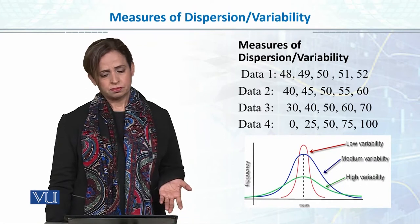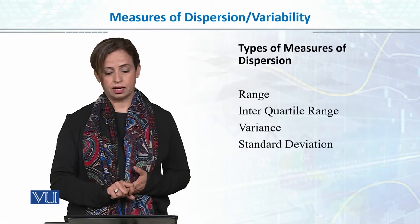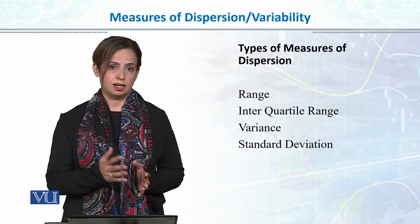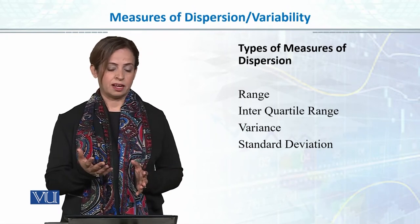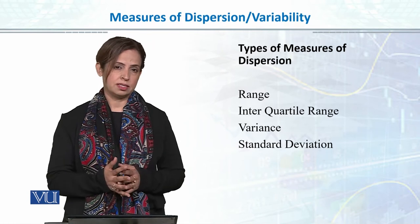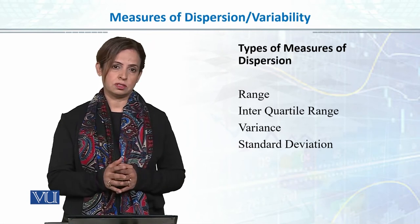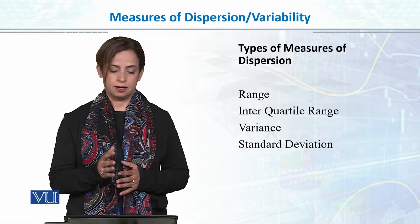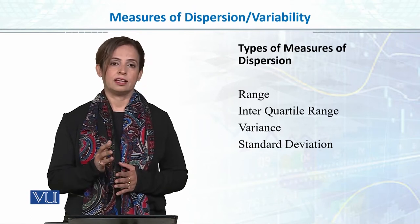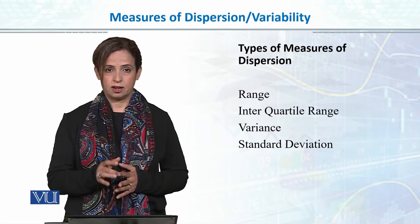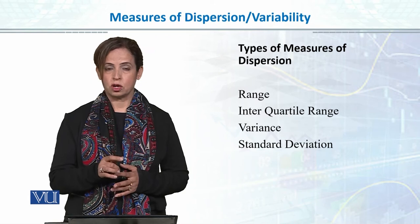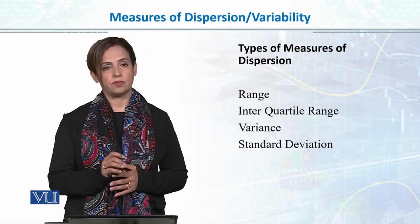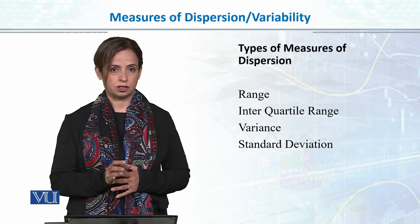In today's lecture, we will cover measures of dispersion or variability. Primarily there are four or five measures written in your recommended textbooks. They are: range, interquartile range, mean deviation, and then variance and standard deviation.